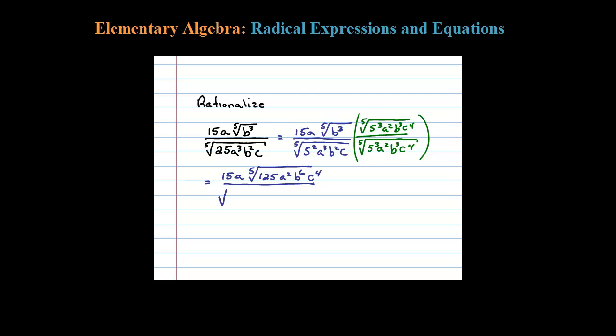In the denominator, watch the magic: fifth root, five to the third—that's five squared times five to the third. Five squared times five to the third is five to the fifth. That's what we want, right? A to the third times a squared is a to the fifth. B squared times B is B to the fifth. All the powers in the denominator are fifth powers—this is a perfect fifth root.